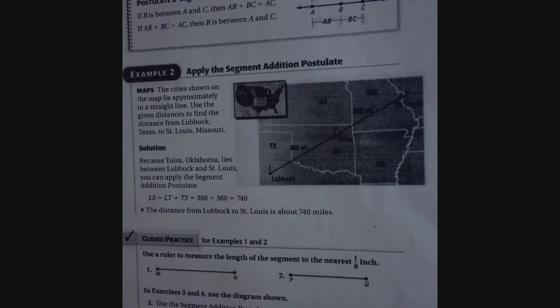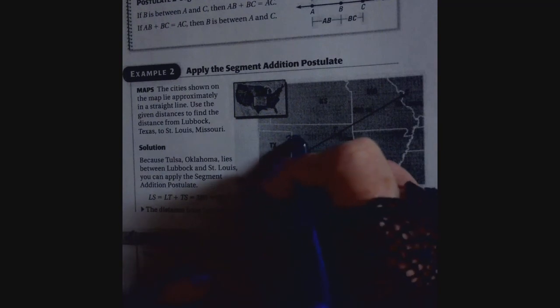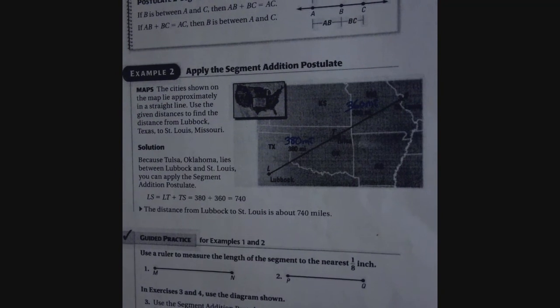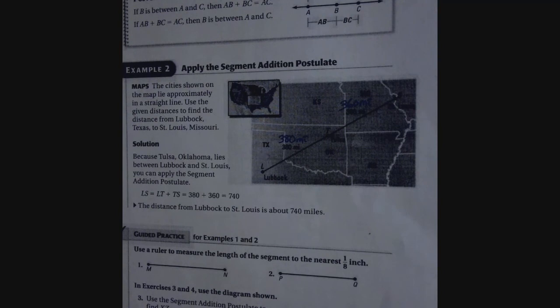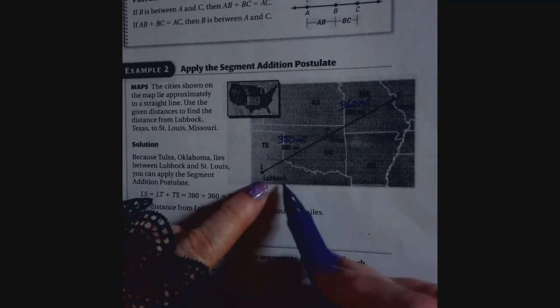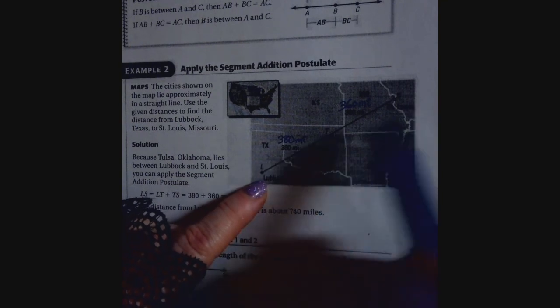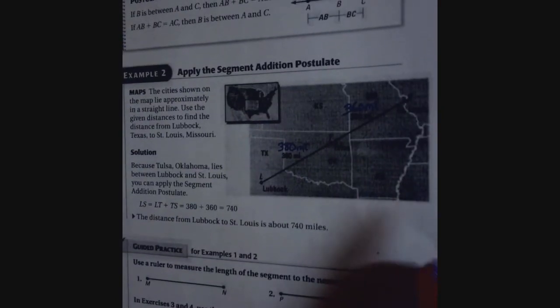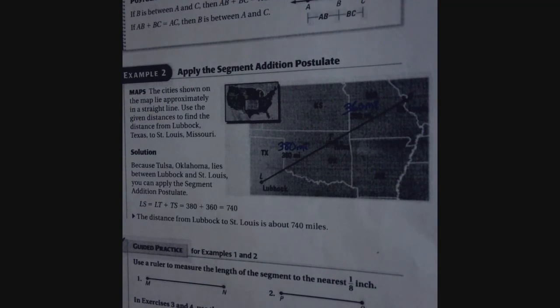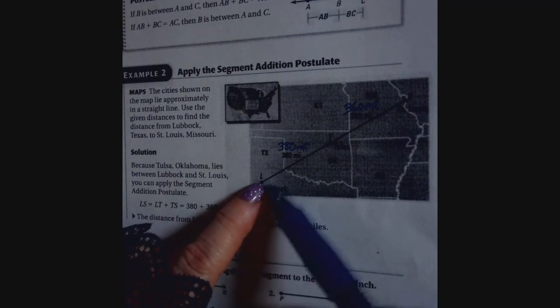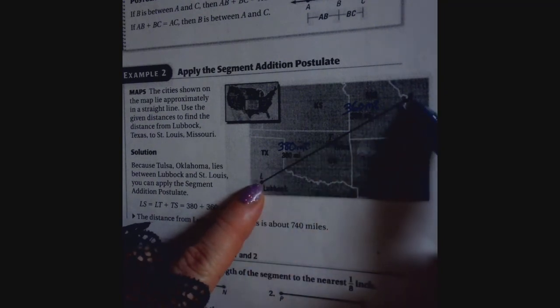All right, so we're going to use this on a real world problem. So the cities shown on the map lie approximately in a straight line. So they're saying a straight line. So here you've got Lubbock, here you've got Tulsa, and here you've got St. Louis. Use the given distances to find the distance from Lubbock, Texas here to St. Louis, Missouri. So the distance between this line here.